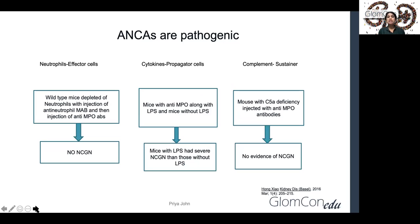The roles of different cells are shown by different mouse models. The role of neutrophils as effector cells is shown in a wild-type mouse model depleted of neutrophils by anti-neutrophil monoclonal antibodies — when injected with anti-MPO antibodies, there was no evidence of necrotizing glomerulonephritis. The role of cytokines as propagator cells is shown by mice with anti-MPO incubated with lipopolysaccharide having more severe glomerulonephritis than those without. The role of complement as a sustainer is shown in a mouse model depleted of C5A — when injected with anti-MPO antibodies, there was no evidence of necrotizing glomerulonephritis.